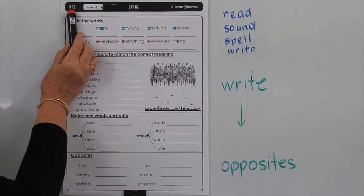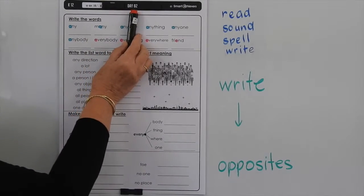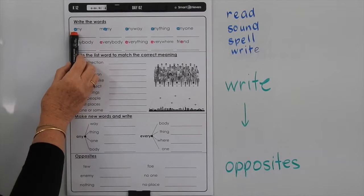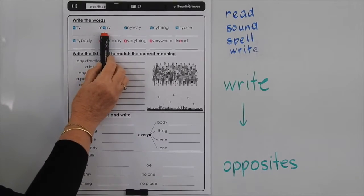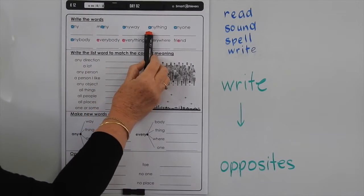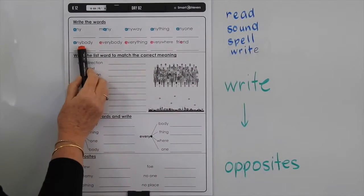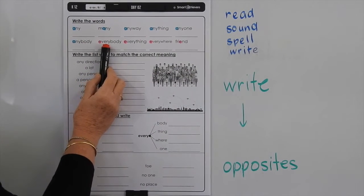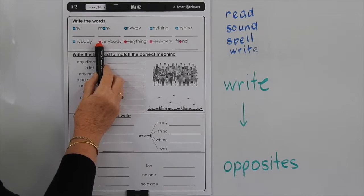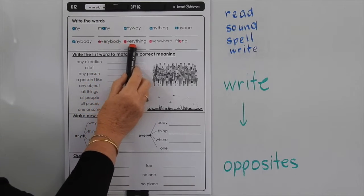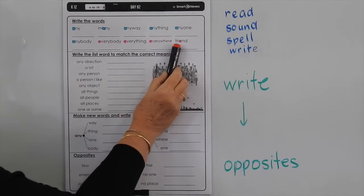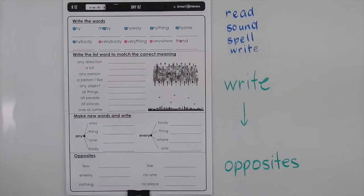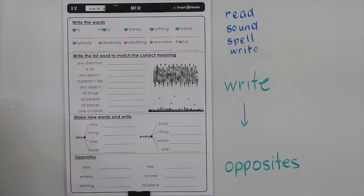This is level K, list 12, and we're doing day two. In these words we've got the letter A making the short-E sound in 'any,' 'many,' 'anyway,' 'anything,' 'anyone,' 'anybody.' And in these ones we've got the short-E sound with the letter E — so we've got 'everybody,' 'everything,' 'everywhere,' and 'friend.' So let's go back and have a look at some of the other things happening in these words.